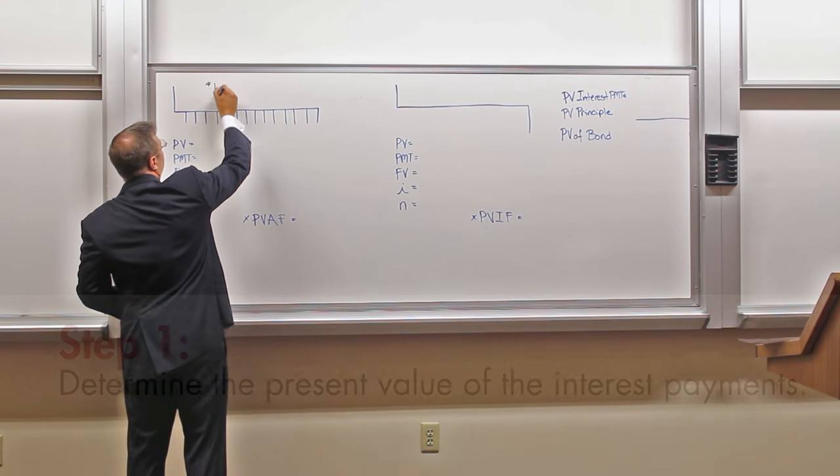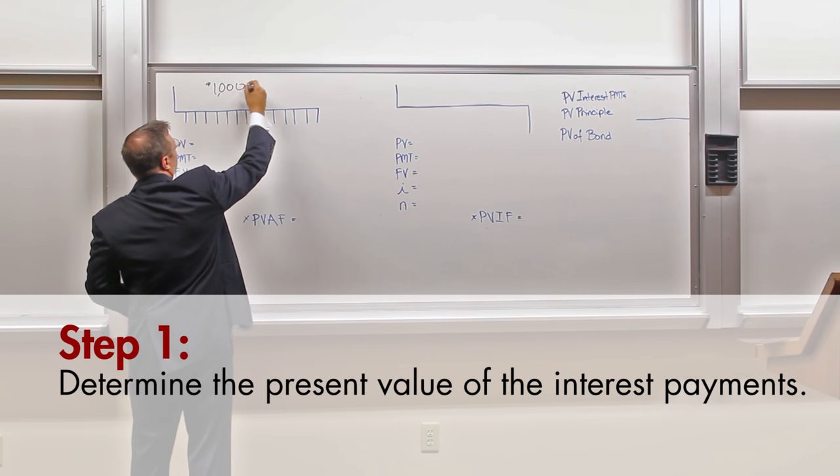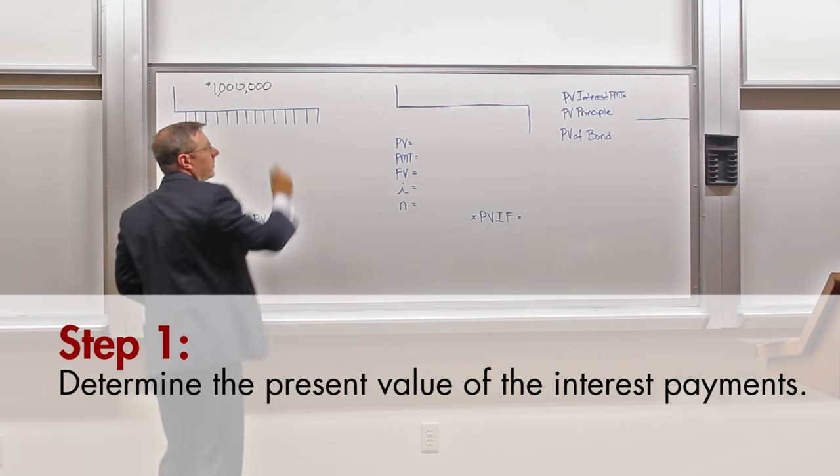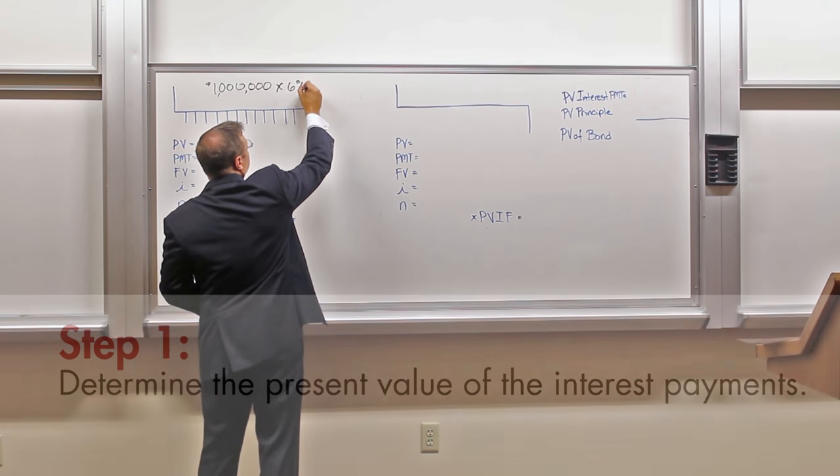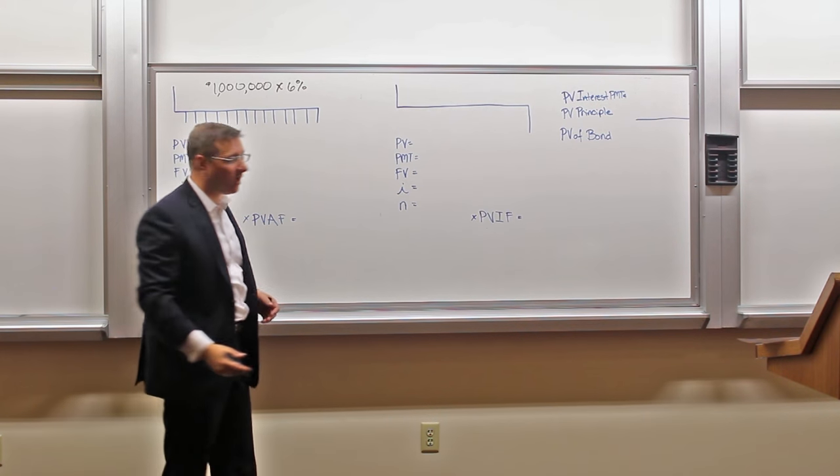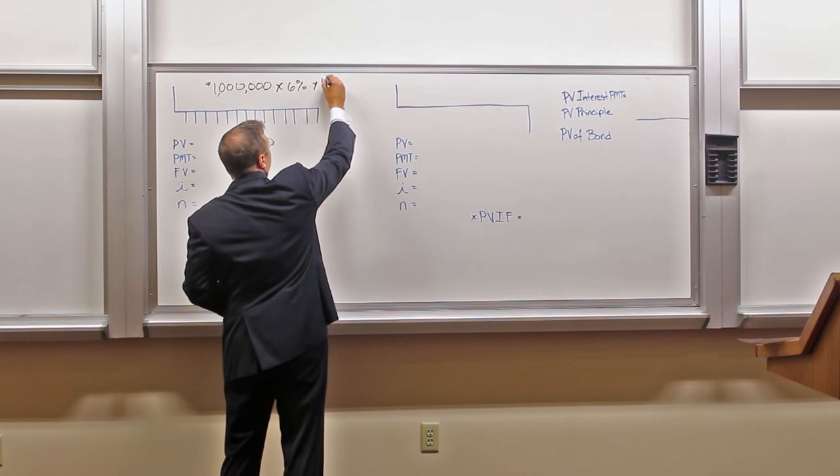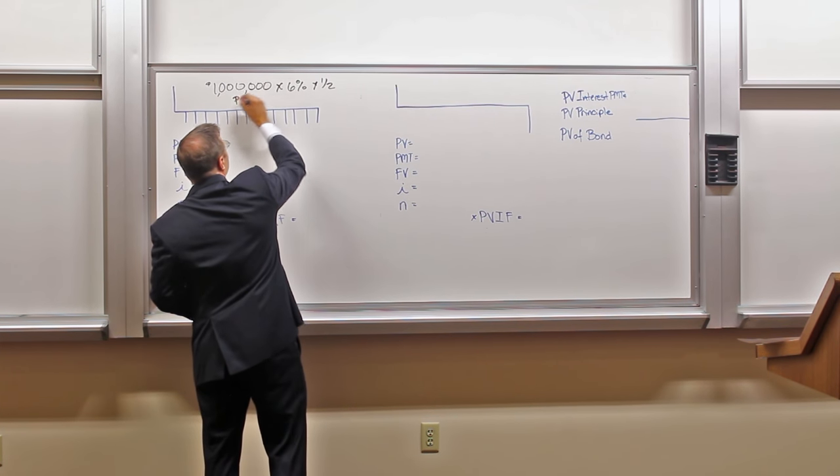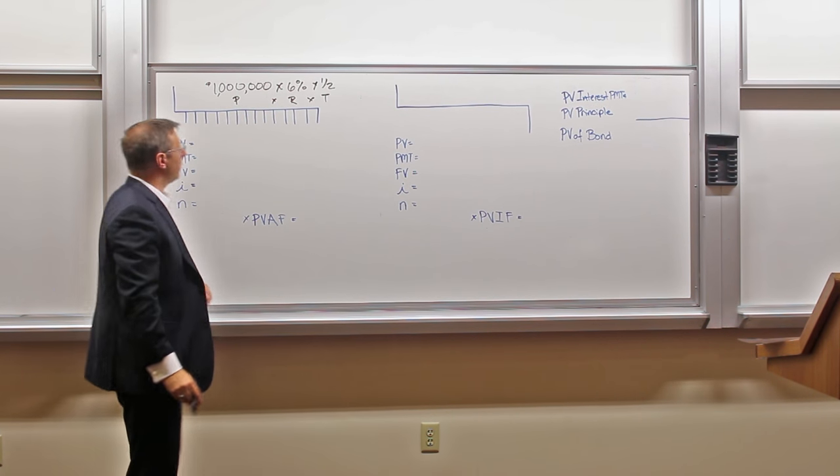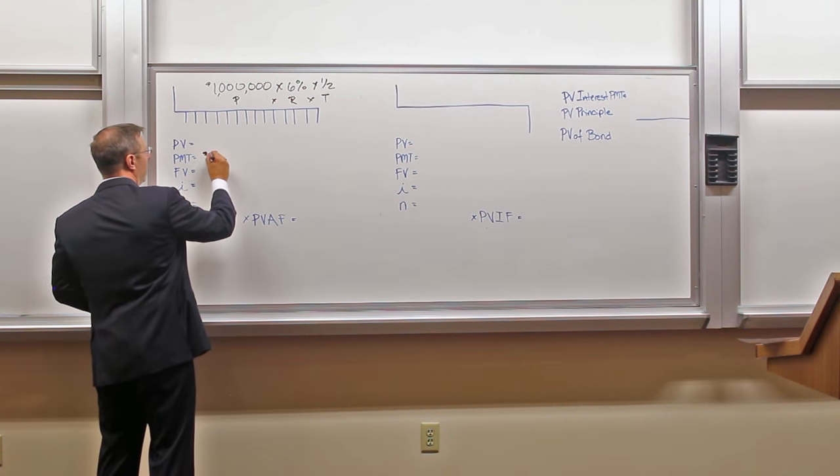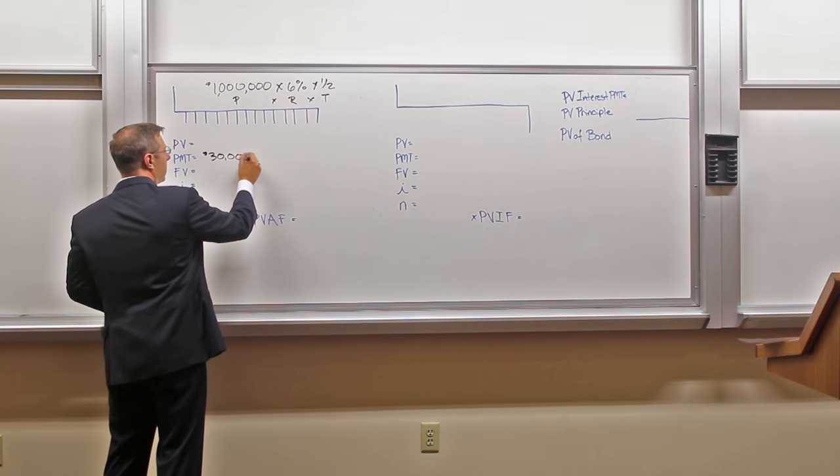We need to figure out where the payment is. So we take our principal amount of the bond, one million dollars, we multiply by the coupon rate, 6%, that's built into the contract, times time. Pay semi-annual principal times rate times time, semi-annually. So that means that our payment is going to be $30,000 in cash.